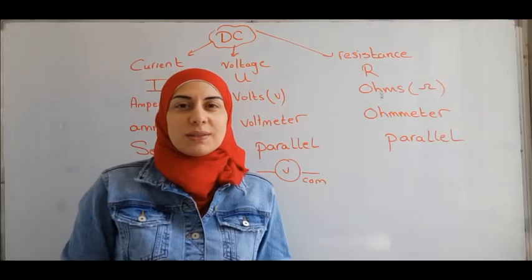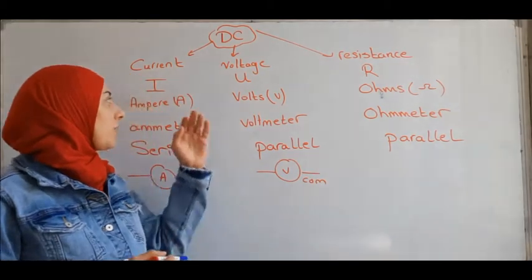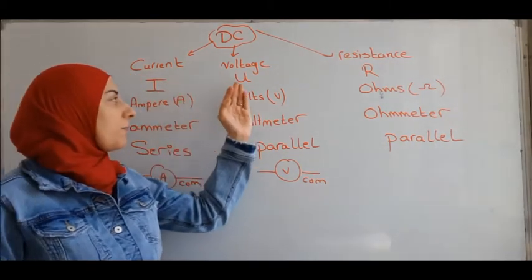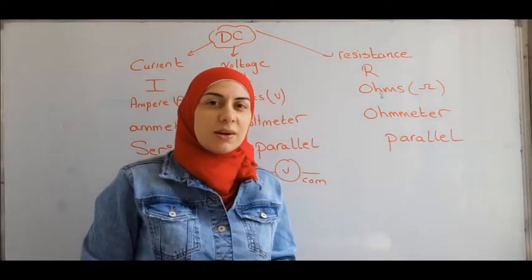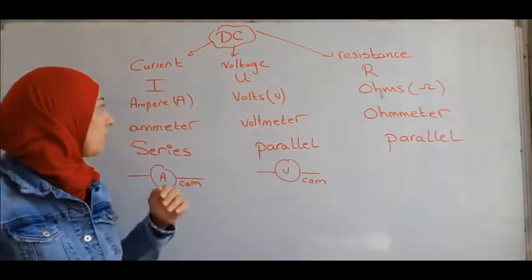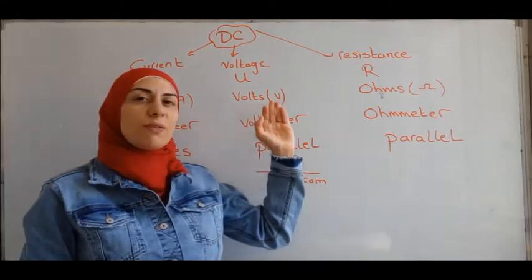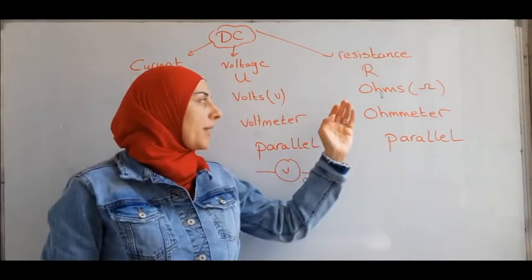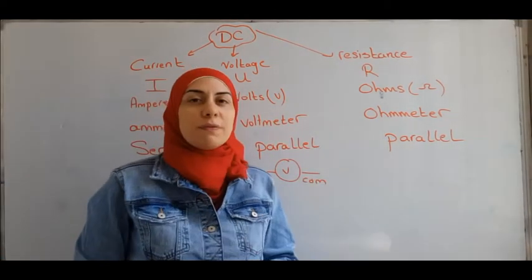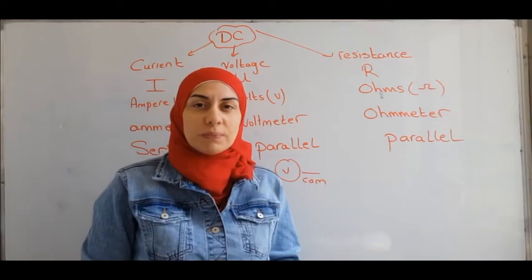We have three quantities that we are studying: the current I, the voltage U, and the resistance R. The unit of the current is the ampere, the unit of the voltage is the volt, and the unit of the resistance is the ohm.